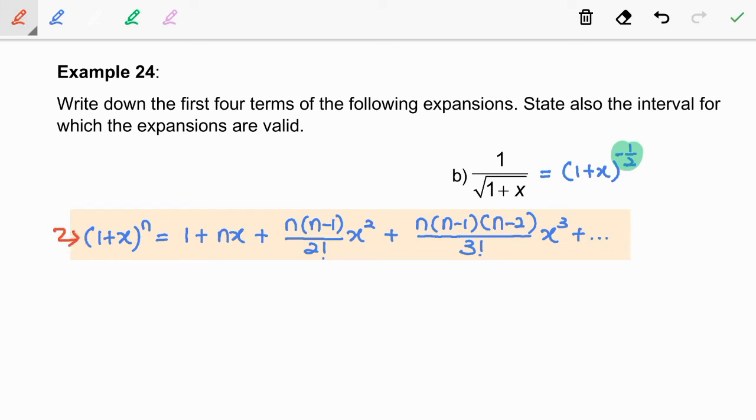Now, let us identify x and n by comparing 1 plus x to the power of negative half with 1 plus x to the power of n. As we see here, x is equal to x, remain the same, and n is negative 1 over 2.